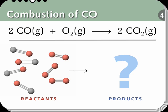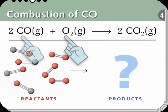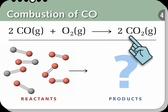This is a pictorial example of a limiting reactant situation. Here we have the reaction of CO and oxygen to give CO2. The balanced equation shows us that two molecules of CO require one molecule of oxygen to give two molecules of CO2.